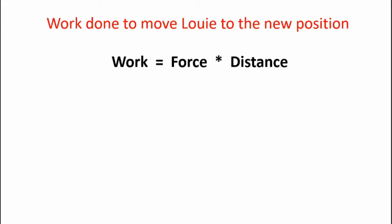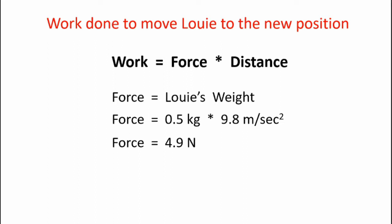Now the work done to move Louis to the new position is work is equal to force times distance. We need to determine the force. And earlier we said the force is equal to Louis's weight. So to calculate that, we take the force is equal to 0.5 kilograms, his mass, times the acceleration due to gravity, 9.8 meters per second squared. This gives us a force of 4.9 newtons. So the work done to move Louis that one meter is work is equal to 4.9 newtons times one meter or 4.9 newton meters.